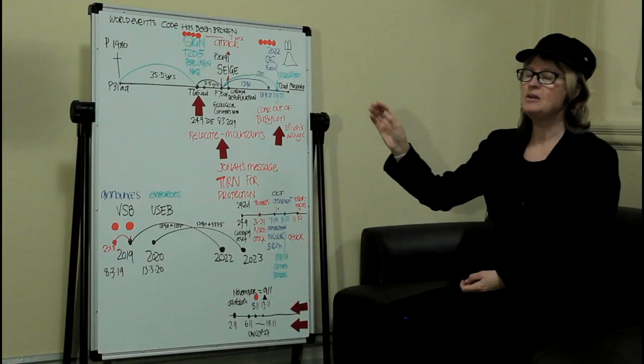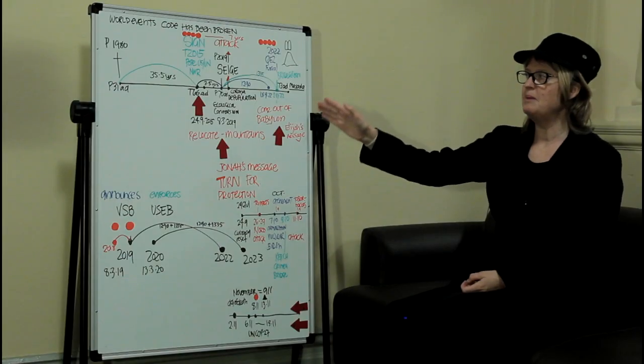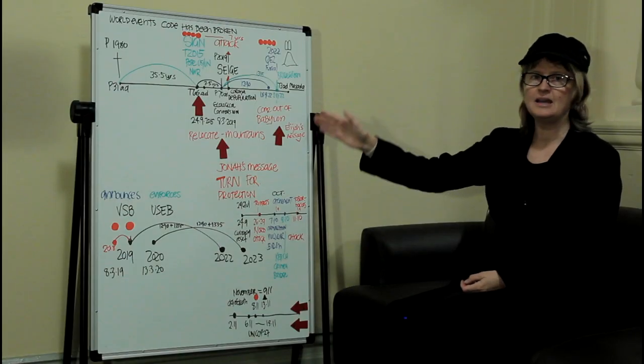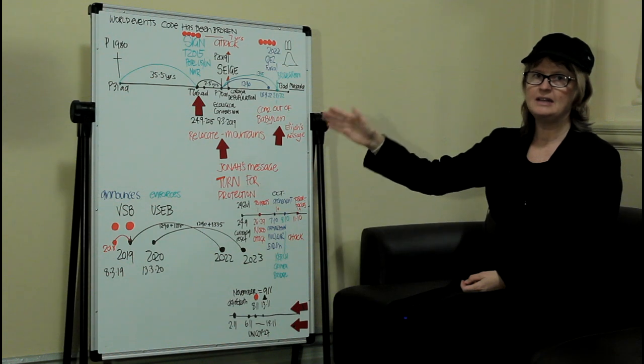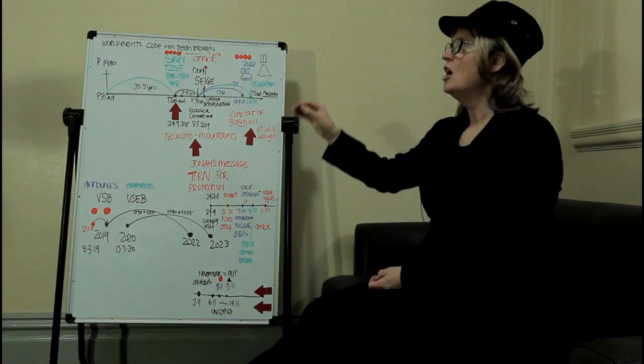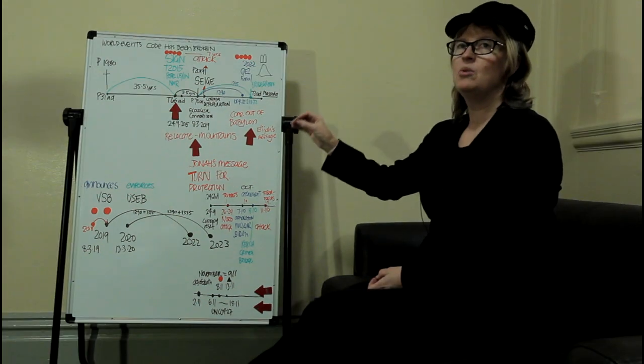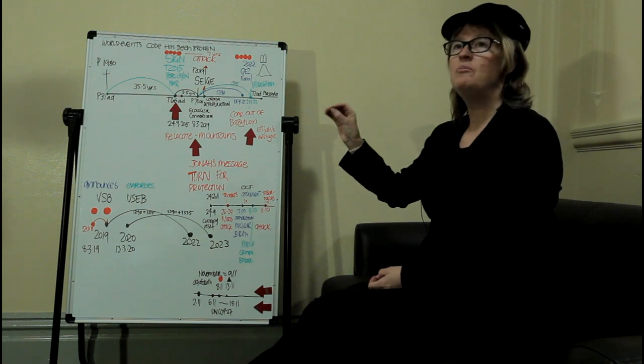In other words what has happened is because these world events have repeated exactly on the same time at the same date as a previous history, we have broken the world event code. We've broken the code.